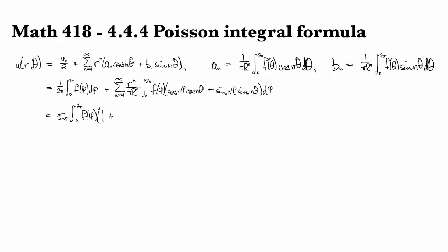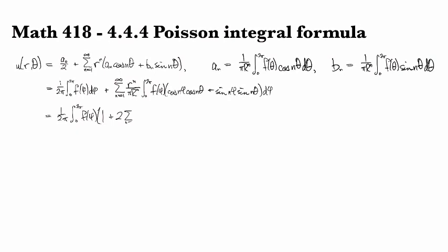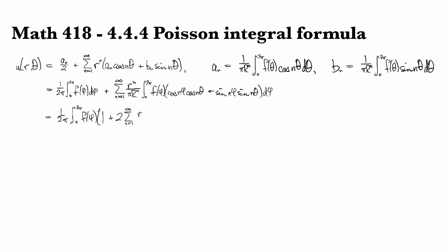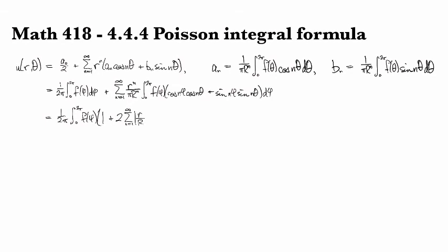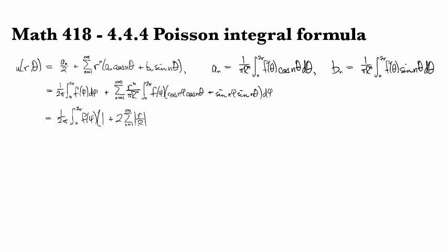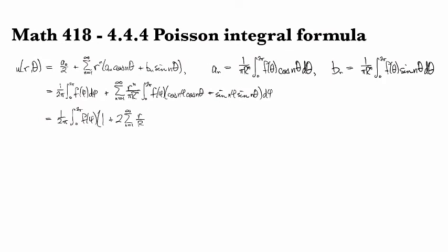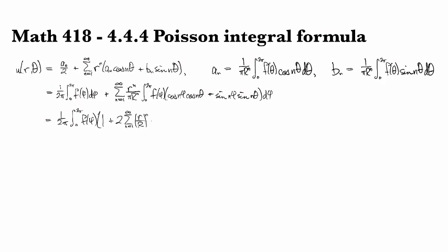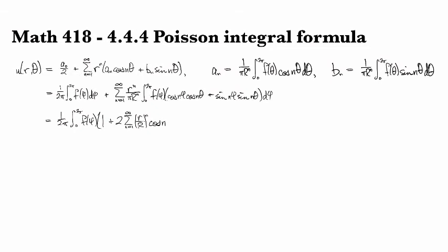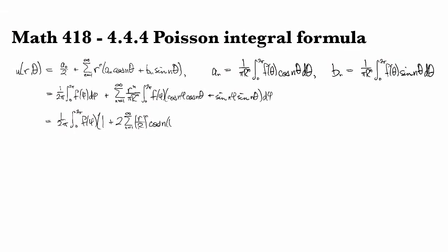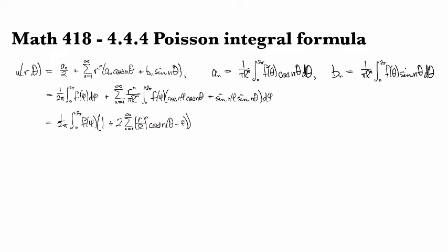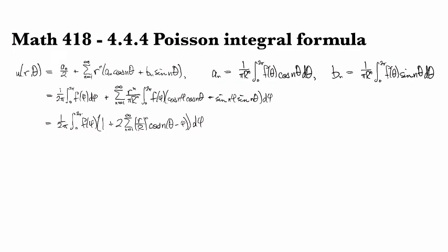And then we have 1 plus 2 times the series from 1 to infinity of (r/R)^n. And then the trig identity gives us cosine of n times the difference (θ - φ). And that's with respect to dφ.